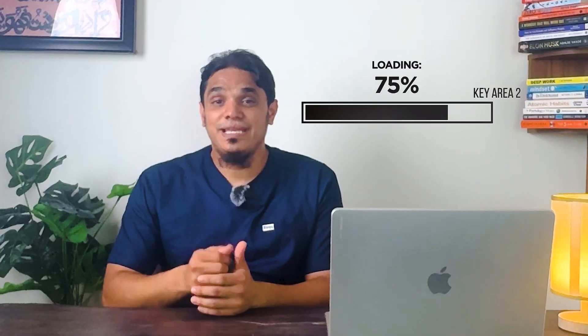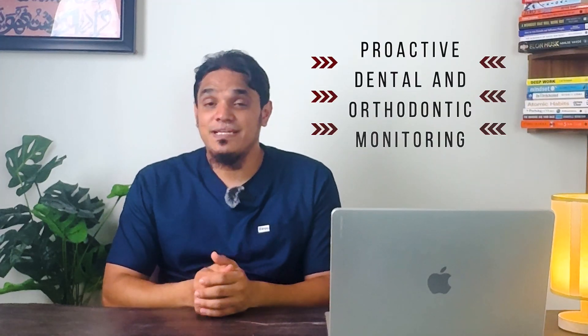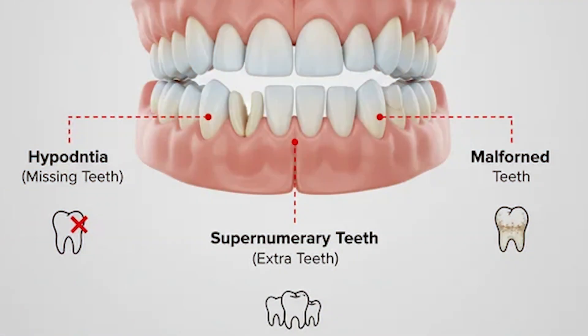Key area two is proactive dental and orthodontic monitoring. As a pediatric dentist, my role is to be a detective finding common challenges unique to cleft anatomy. Very common dental issues we see in cleft lip patients include hypodontia (missing teeth).